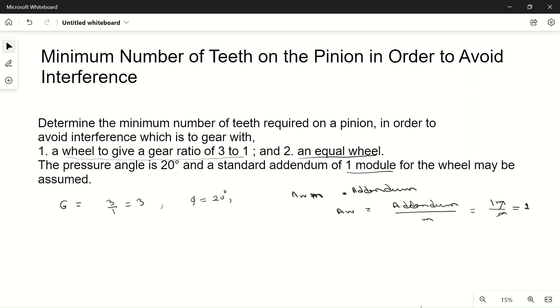Now, the formula for the minimum number of teeth required on a pinion is: minimum number of teeth equals 2 times a_w divided by G, times the square root of [1 plus 1/G times (1/G plus 2) times sine squared φ], minus one.